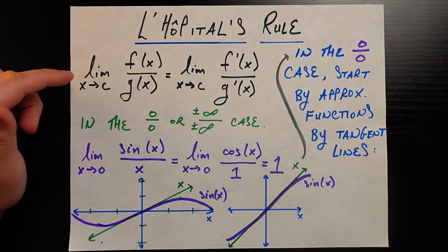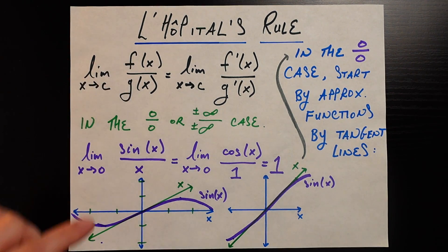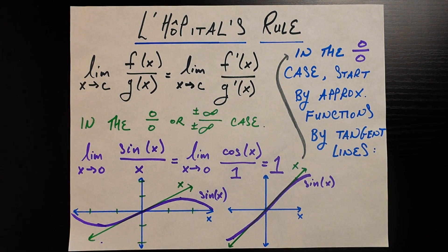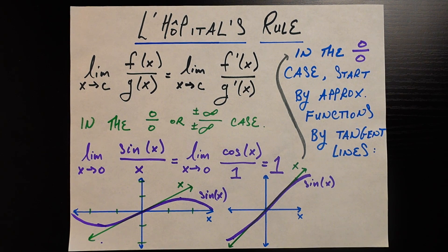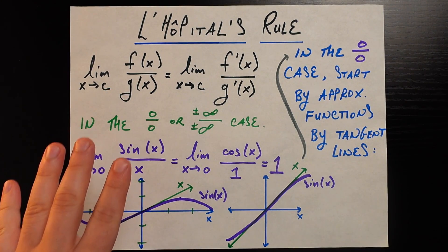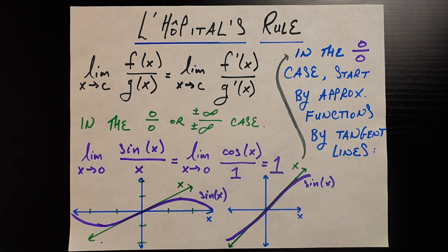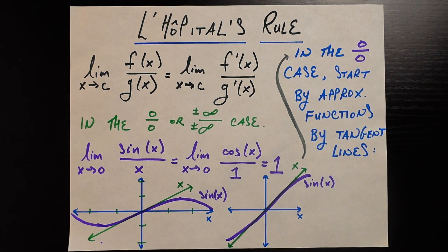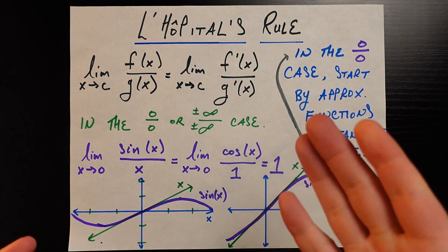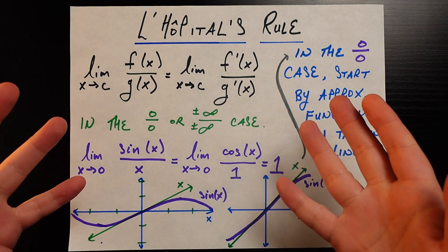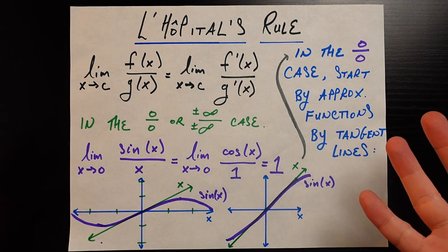Why should it be true that if I'm trying to compute the limit as x approaches c of the quotient between two functions f and g, and I run into a problem case — for example both the numerator and denominator go to zero, or both of them go to plus or minus infinity — why is it that in those cases I'm able to just replace that limit and say it's equivalent to the limit as x approaches c of the quotient of their derivatives, f prime of x divided by g prime of x? It seems so neat and tidy, but why is it able to be true?